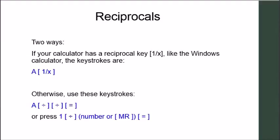To calculate reciprocals, you either have a reciprocal key, like the Windows calculator, labeled 1 over x, or you have some other options. You can enter the number, hit the divides key twice, and then equals, or just use the definition, 1 divides key, your number or anything stored in memory, and hit equals.